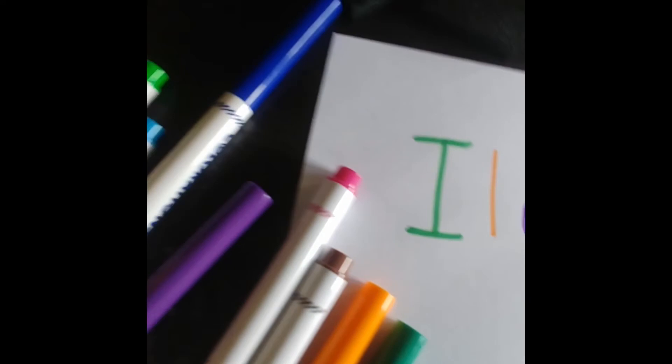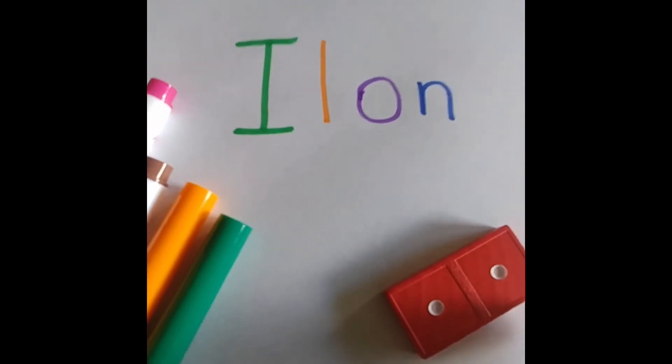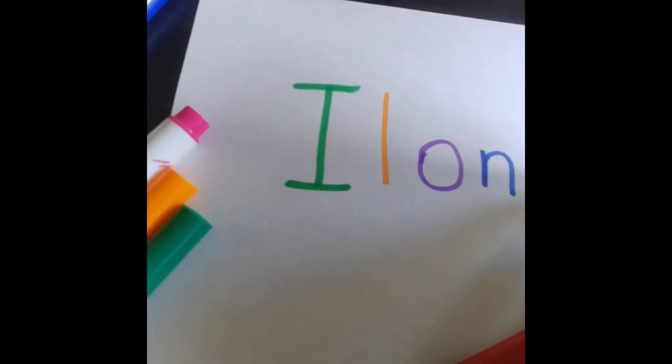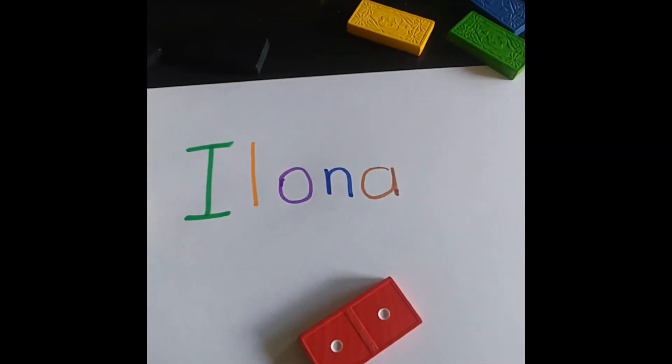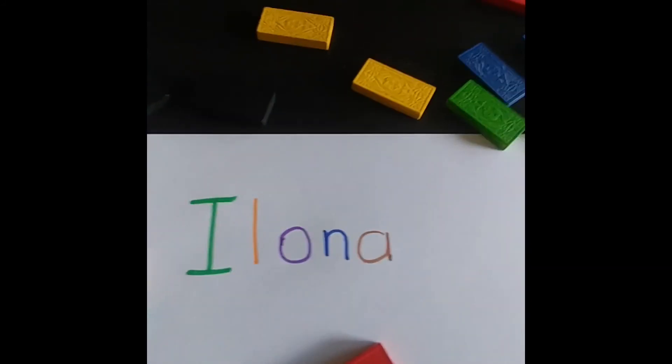And then the last letter in my name. Let's see. One, two. Two is brown. Chocolate. Some of you like to call it chocolate color. And there is my name written in rainbow color.